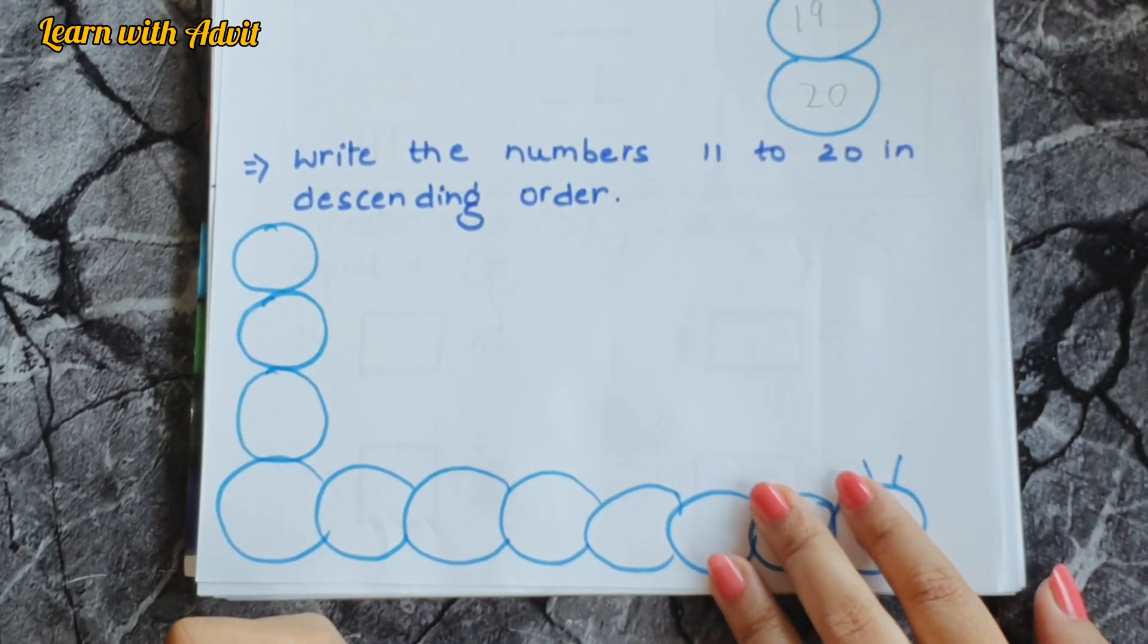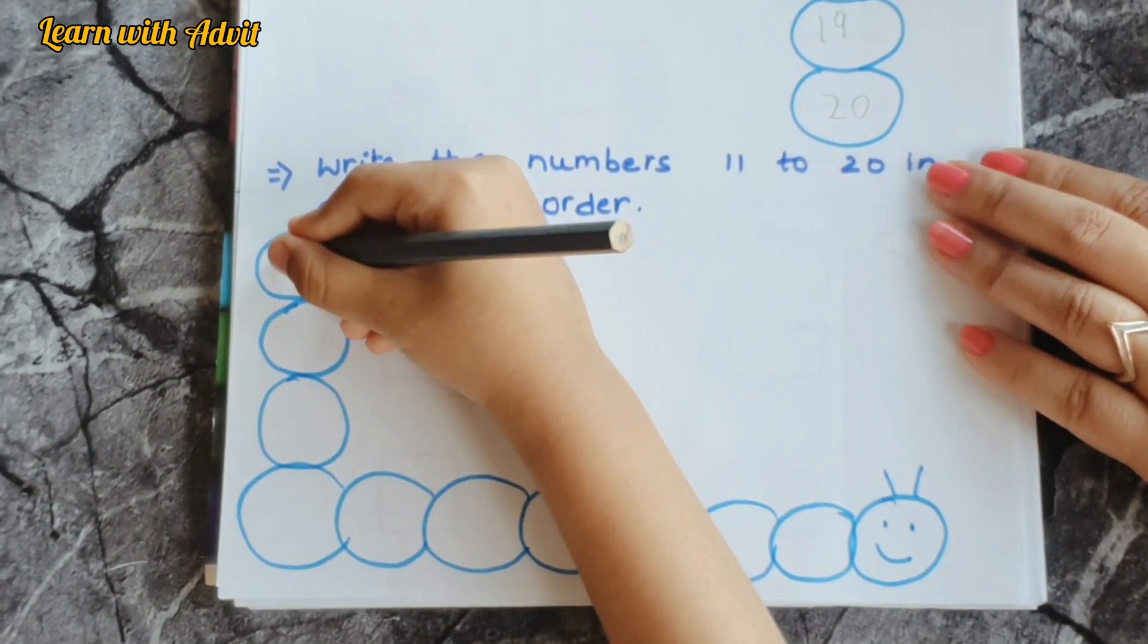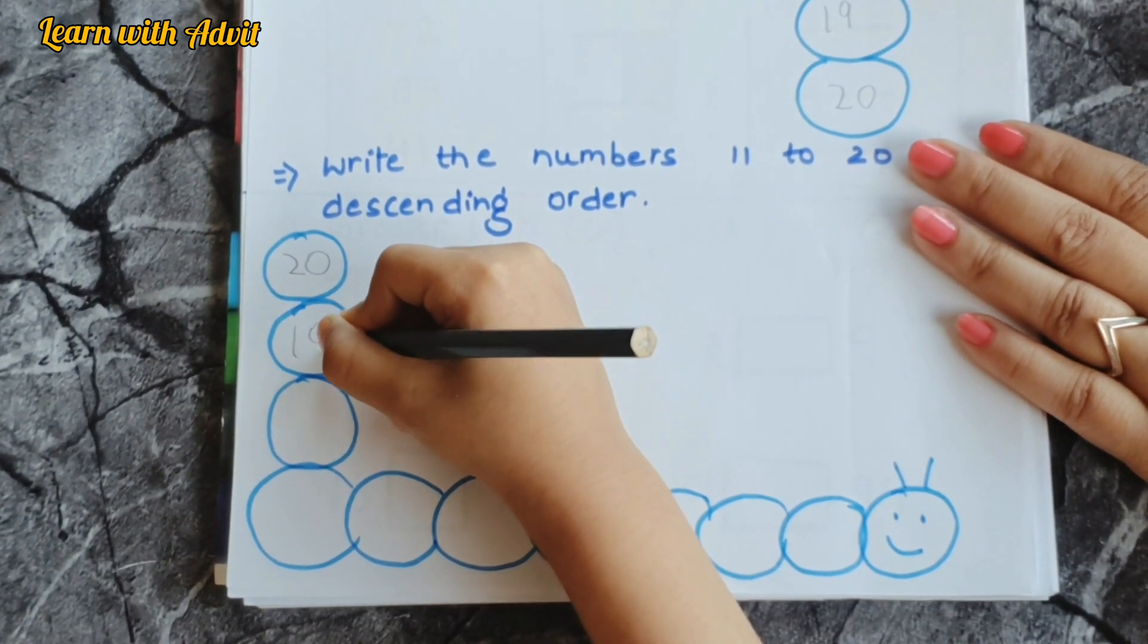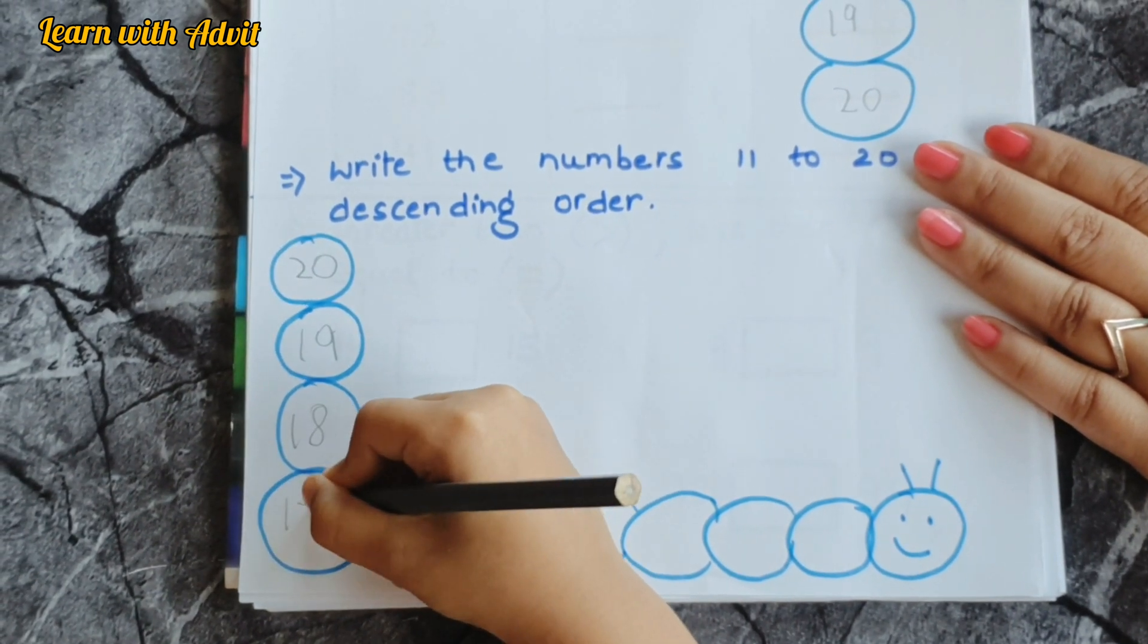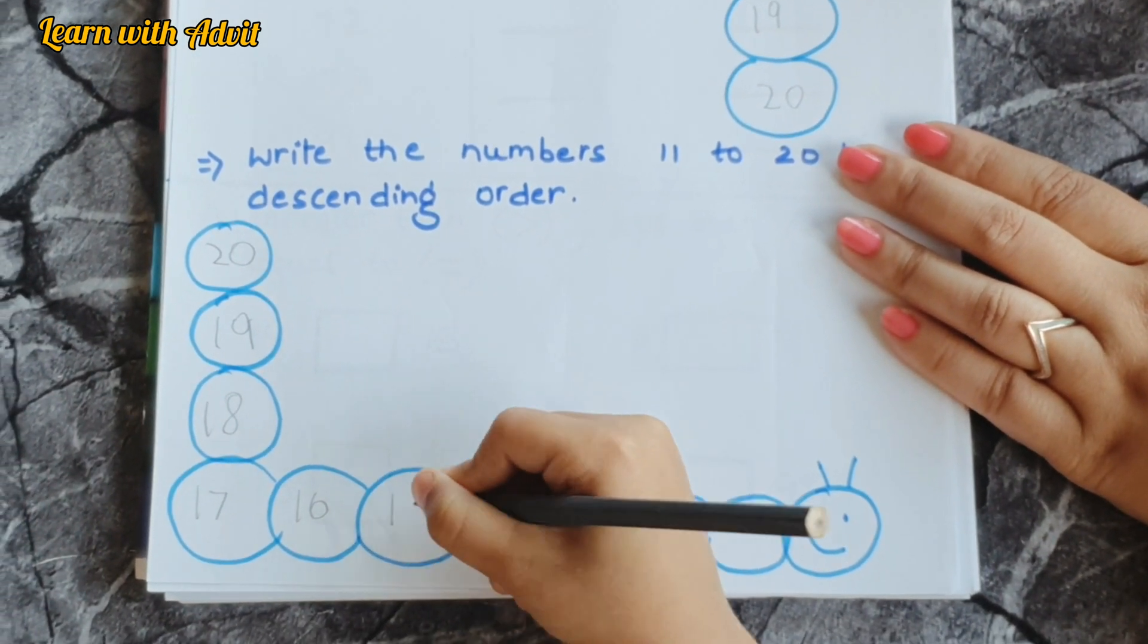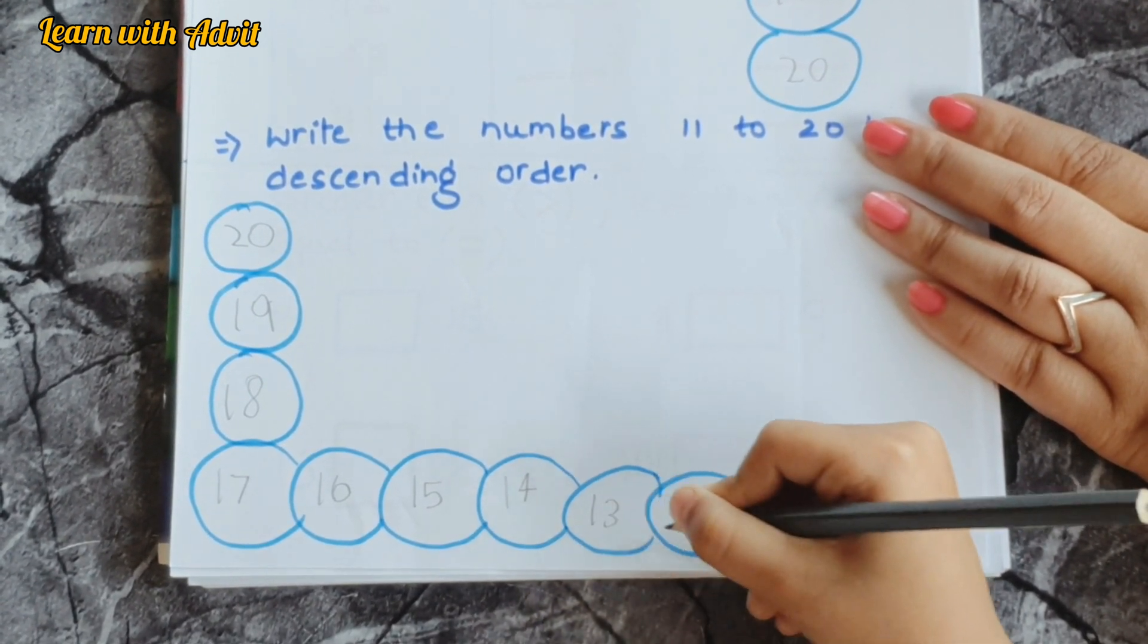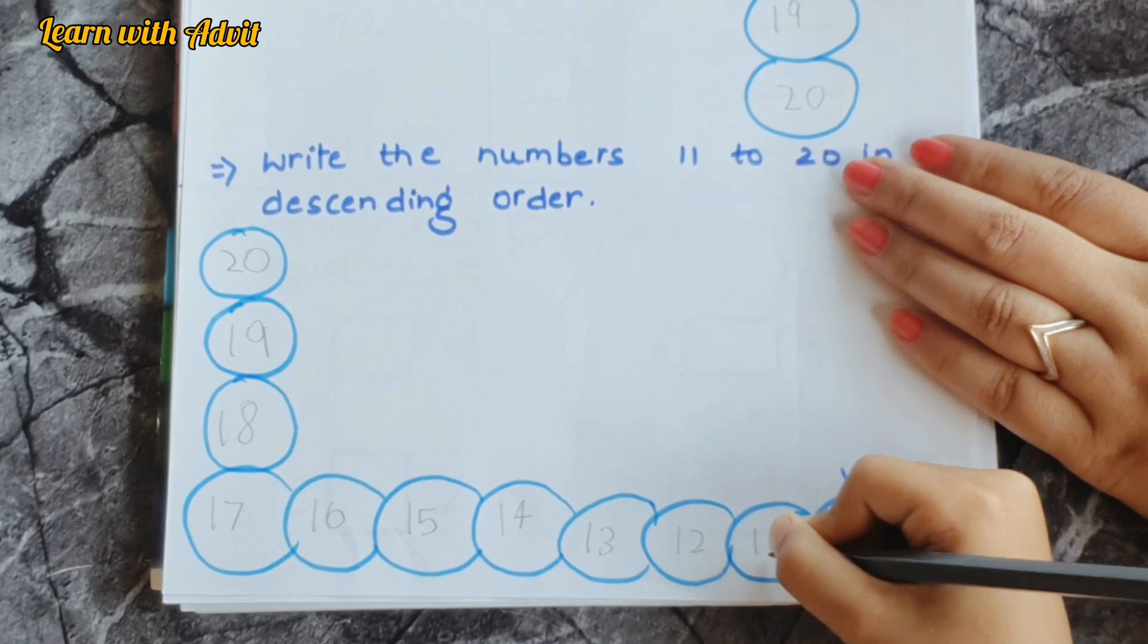And in this, you have to write the numbers 11 to 20 in descending order. Come on, start writing. Nineteen, eighteen, seventeen, sixteen, fifteen, fourteen, thirteen, twelve, eleven. Very good.